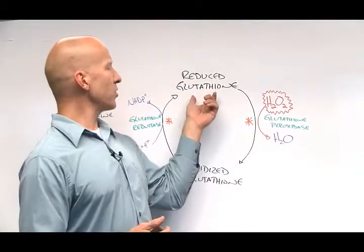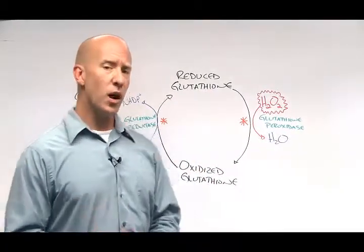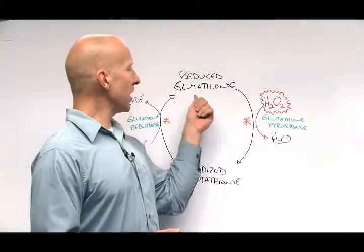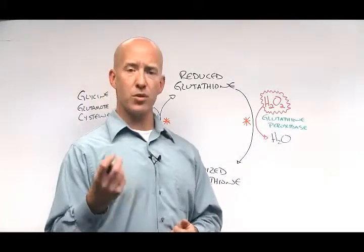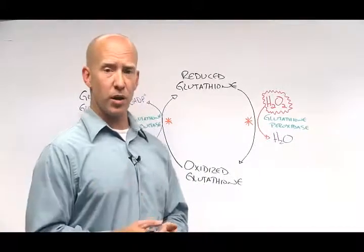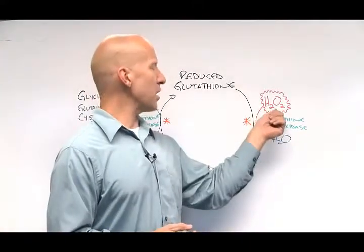It usually exists in the form of what's called reduced glutathione, and here's how it works. Glutathione can actually grab free radicals, or oxidation, oxygen molecules, that would otherwise damage our body.